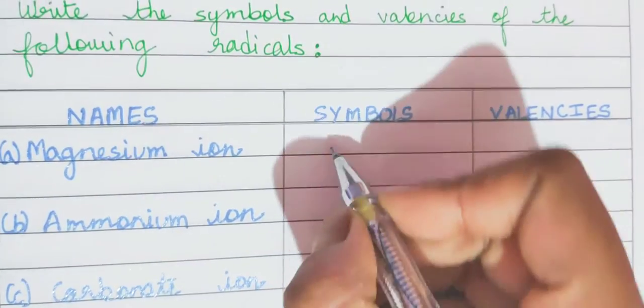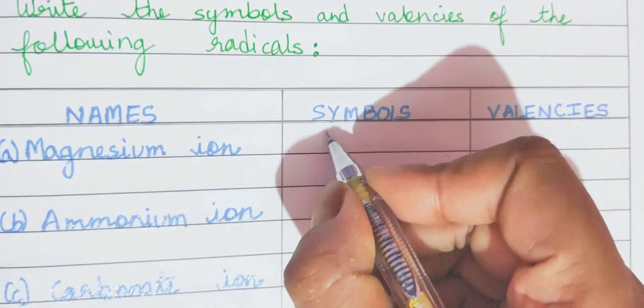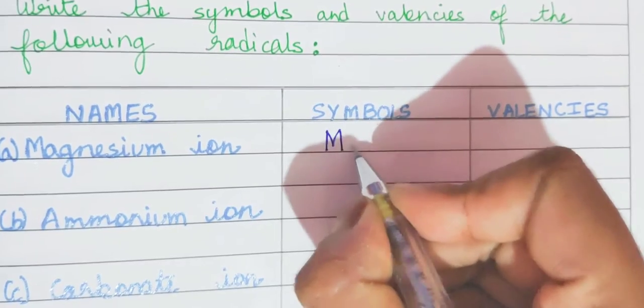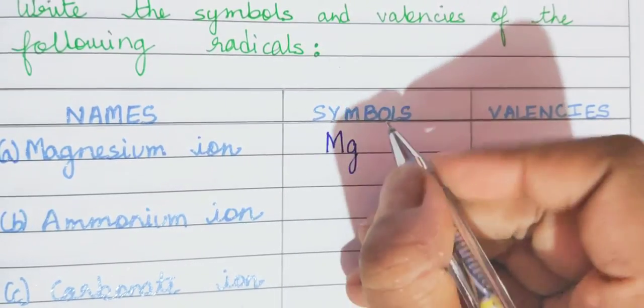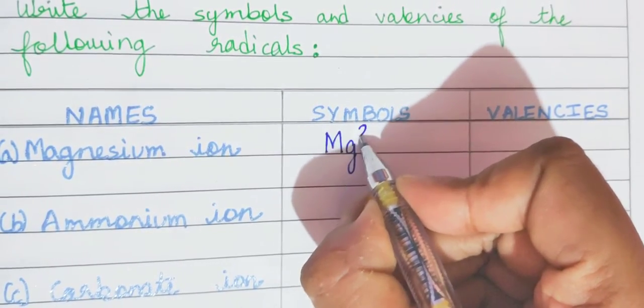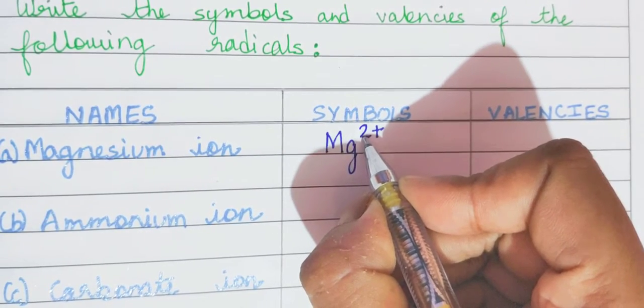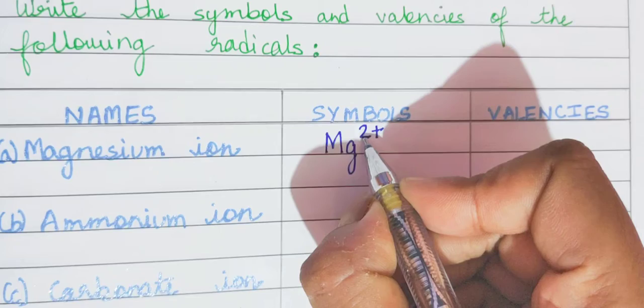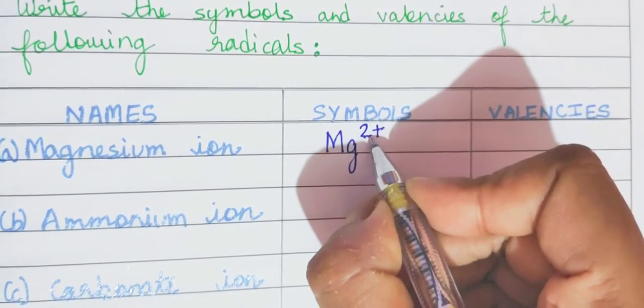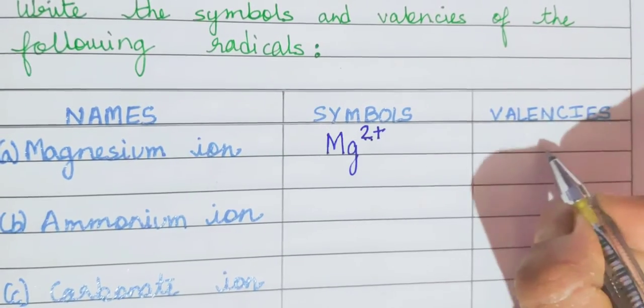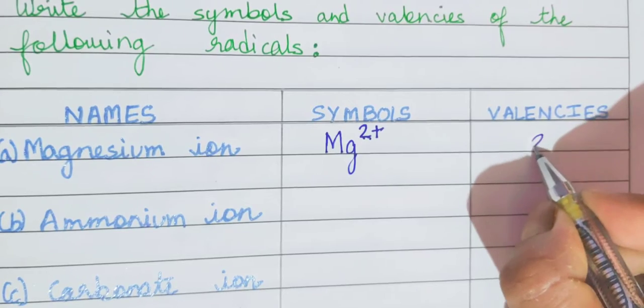Magnesium ion. So what is the symbol of magnesium? It is capital M, small g. And what is the valency? 2 plus. Now, did you see where I wrote the valency? I wrote it as superscript on the top right hand side. So its valency is 2.